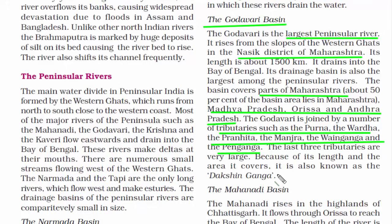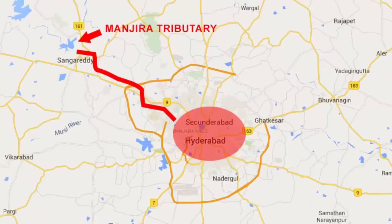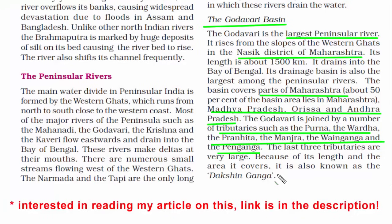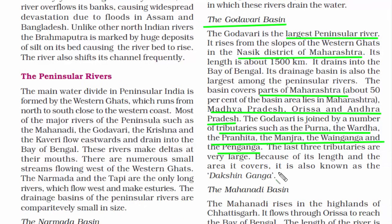A quick fact: the city of Hyderabad gets drinking water from the Manjira tributary, though currently this tributary is dried up and the state government is trying to pull in water from another tributary, creating a new water channel to deliver water to the city. The other name given to Godavari is Dakshin Ganga.